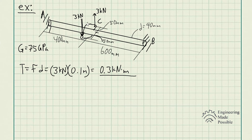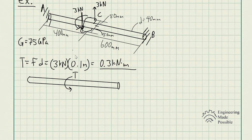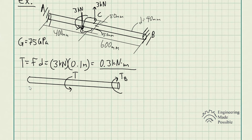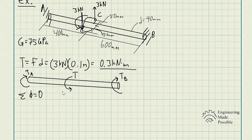The couple moment acts counterclockwise along the shaft. To make things easier, we draw the free body diagram of the shaft with the applied torque T and the reaction torques at A and B. The reaction torques at B and A are opposite to T so that the sum of torques equals zero. We will use the sum of the angle of twist equal to zero to solve for the unknowns.